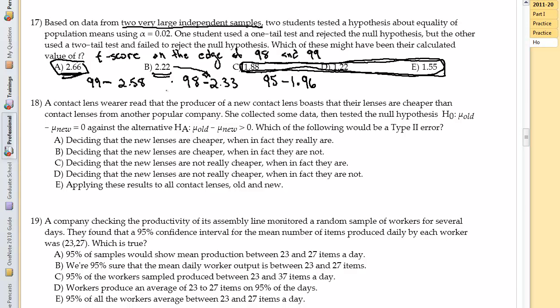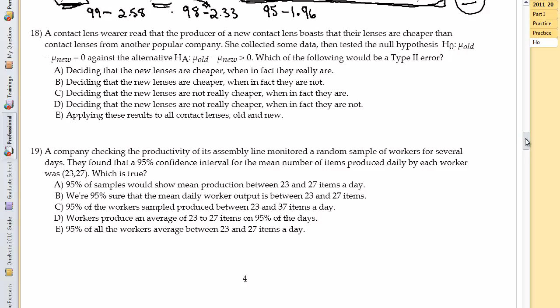So we're just looking at these and giving it our eyeball best guess. I don't know that that makes me happy, but I did it and I got the right answer by comparing those from our reference sheet. Okay, let's try and get 18 and 19 done so that we can finish the page like we've been doing. A contact lens wearer read the producer of a new contact lens boasts that their lenses are cheaper than contact lenses from another popular company.